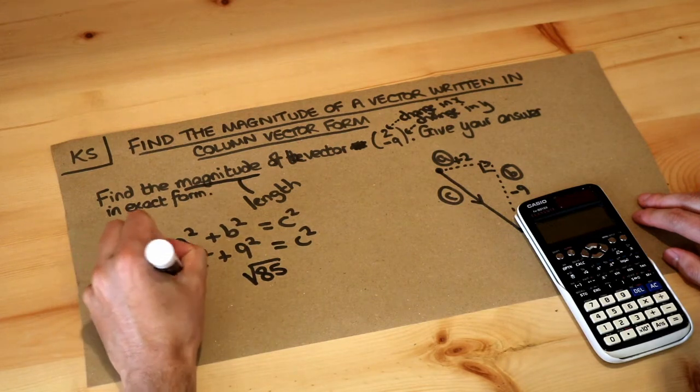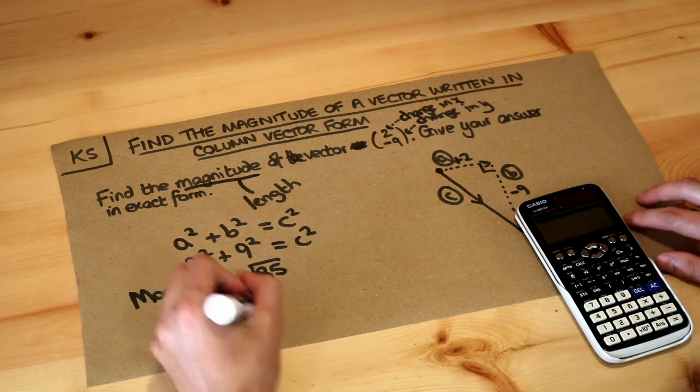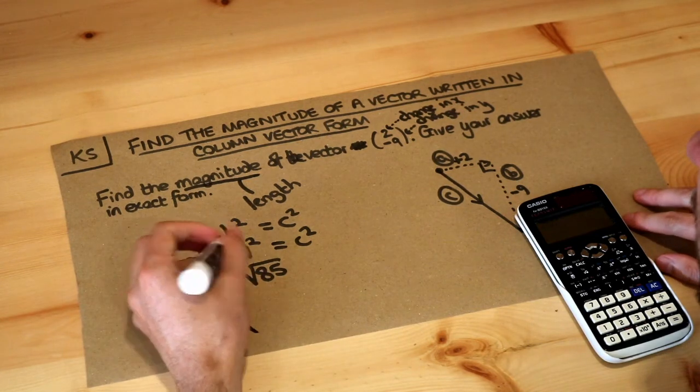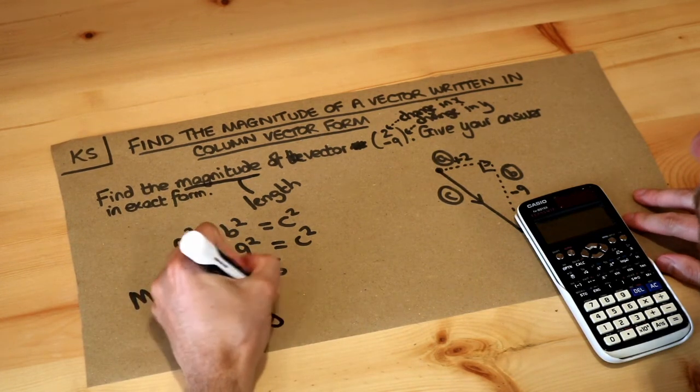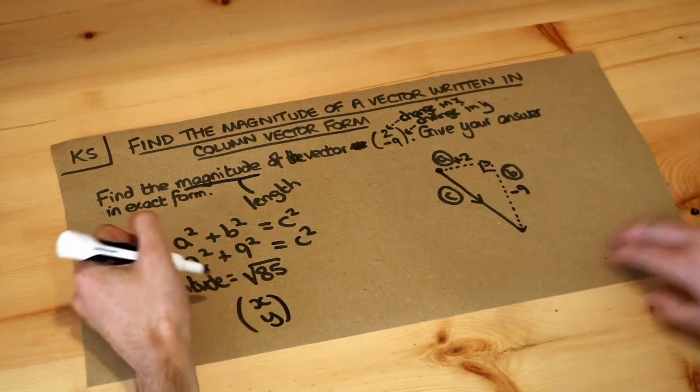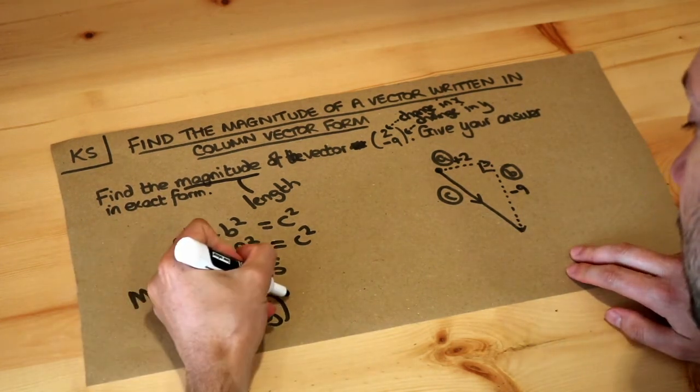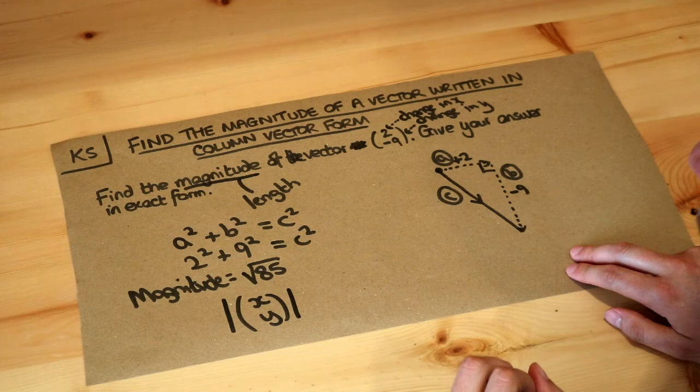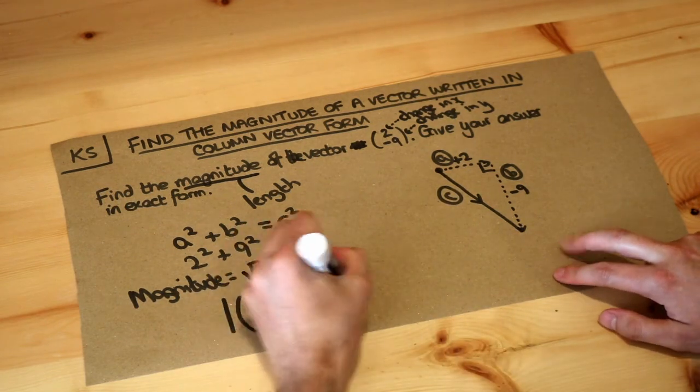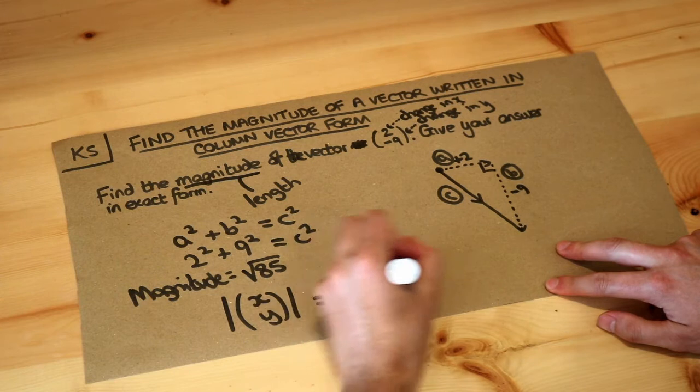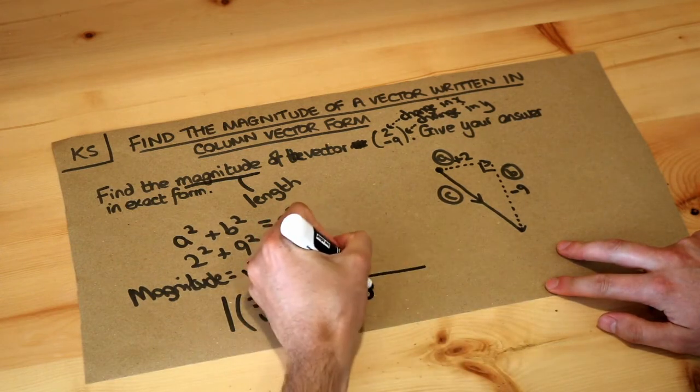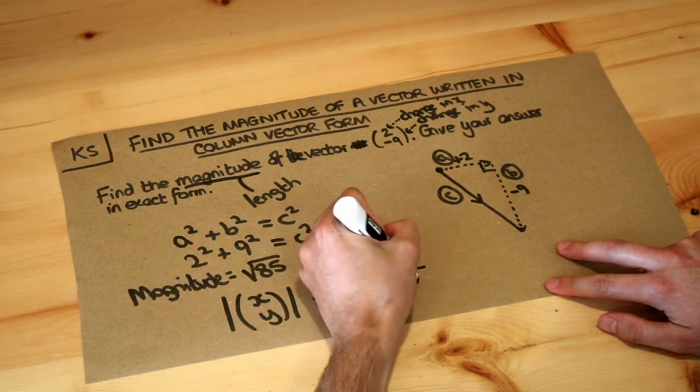So in general, if you want a formula for this, if you have a vector XY and you want to find the magnitude of it, and actually there's a symbol we use for the magnitude. It's this, so you put a bar either side of the vector. Then we just do the square root of the X value squared plus the Y value squared.